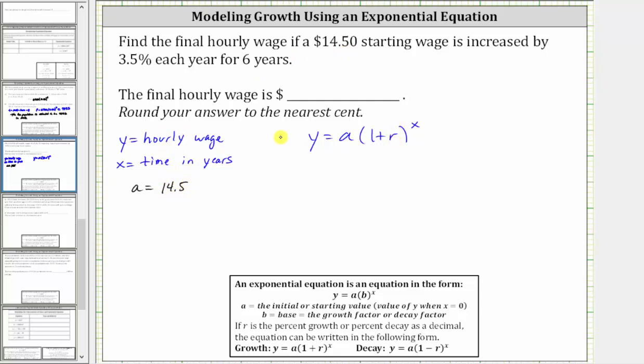And r is the growth rate, which must be expressed as a decimal for the equation. So r is equal to 3.5%, which as a decimal is equal to 0.035, which means the equation is y equals 14.5 times the quantity one plus 0.035.